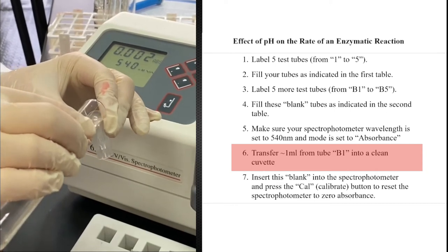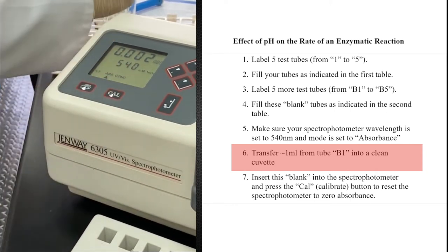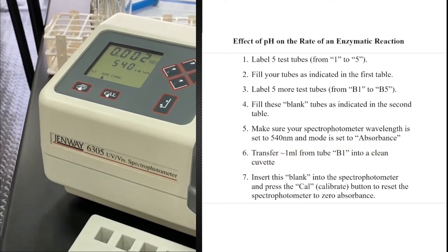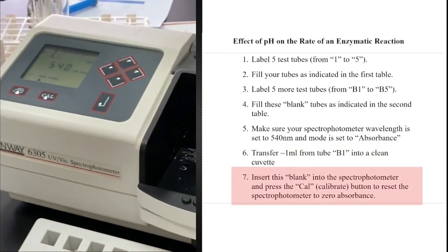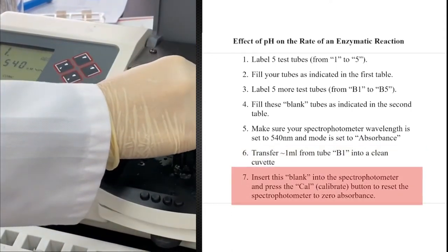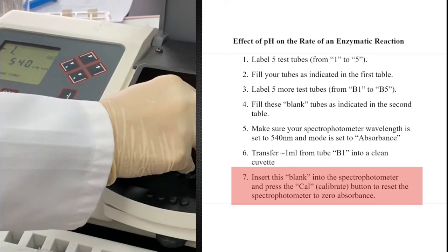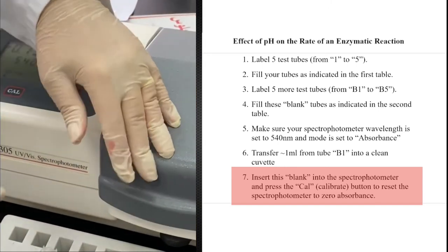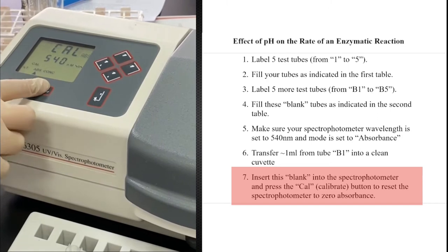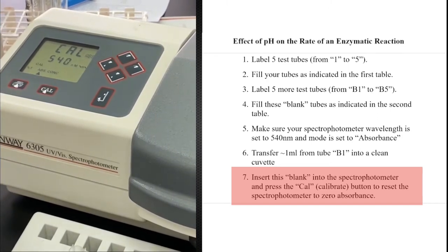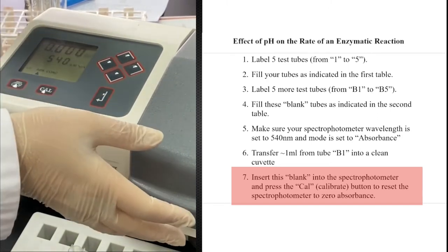Then the cuvette will be inserted inside the spectrophotometer, and we will click calibrate. This is only for calibration—to remove the color of the potato extract itself from our experiment.